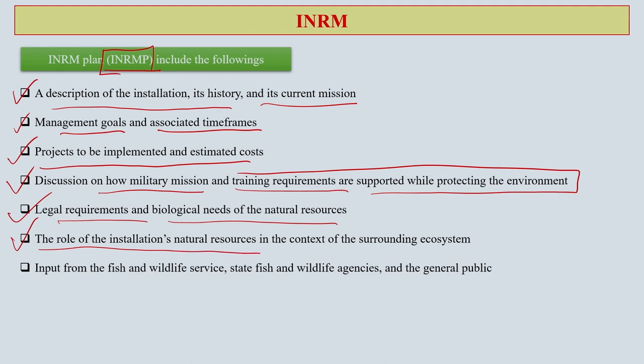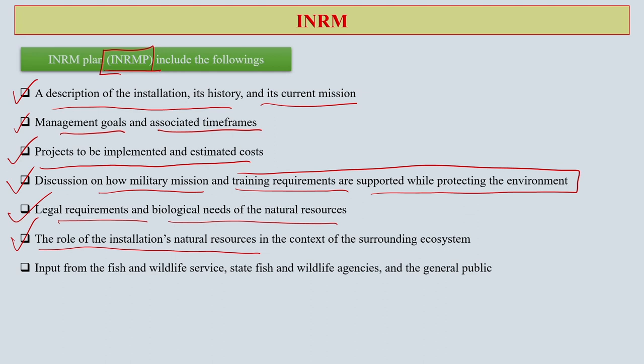The role of installations and natural resources in the context of surrounding ecosystems is also important. Suppose you are suddenly building something in an area which is surrounded by very rich biodiversity, or maybe full of biomedicinal plants, and then you have an installation which is very important from the point of view of human well-being itself. But it also needs to be seen how, in the context of that particular ecosystem and the natural resources available in that ecosystem, they are actually going to get impacted. Input from fish and wildlife services, state fish and wildlife agencies, and also the general public also need to be considered in this planning exercise for integrated natural resource management.